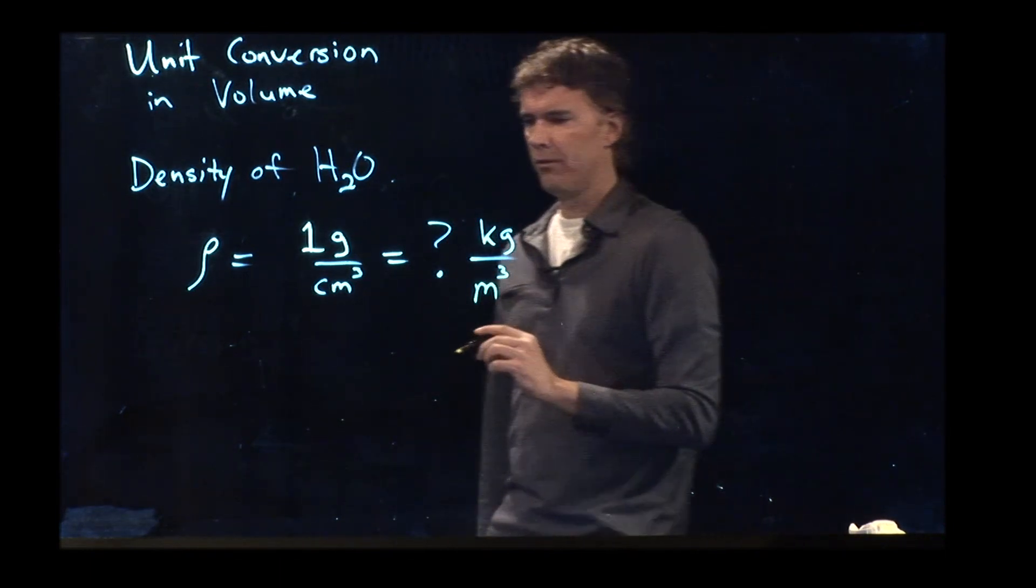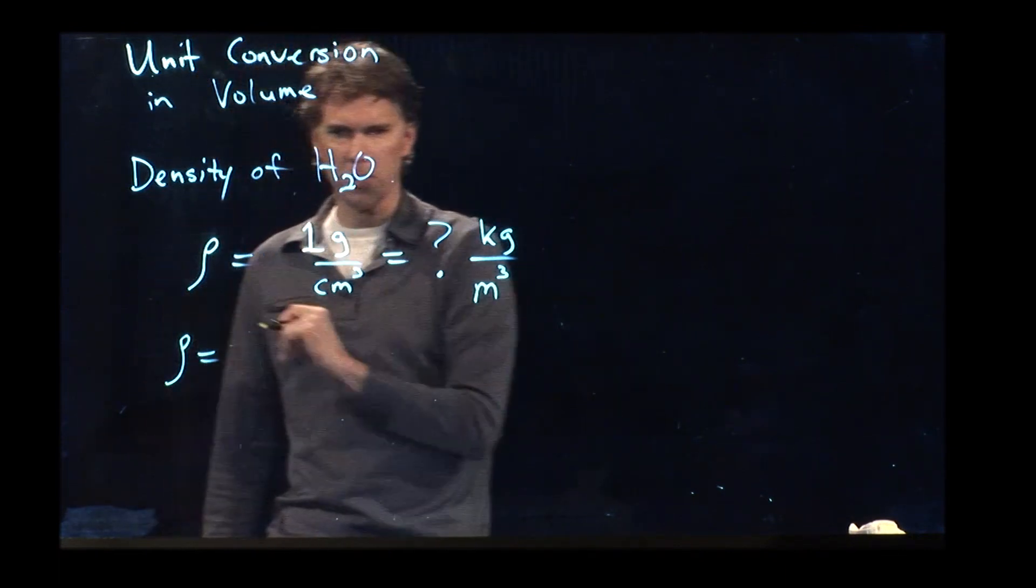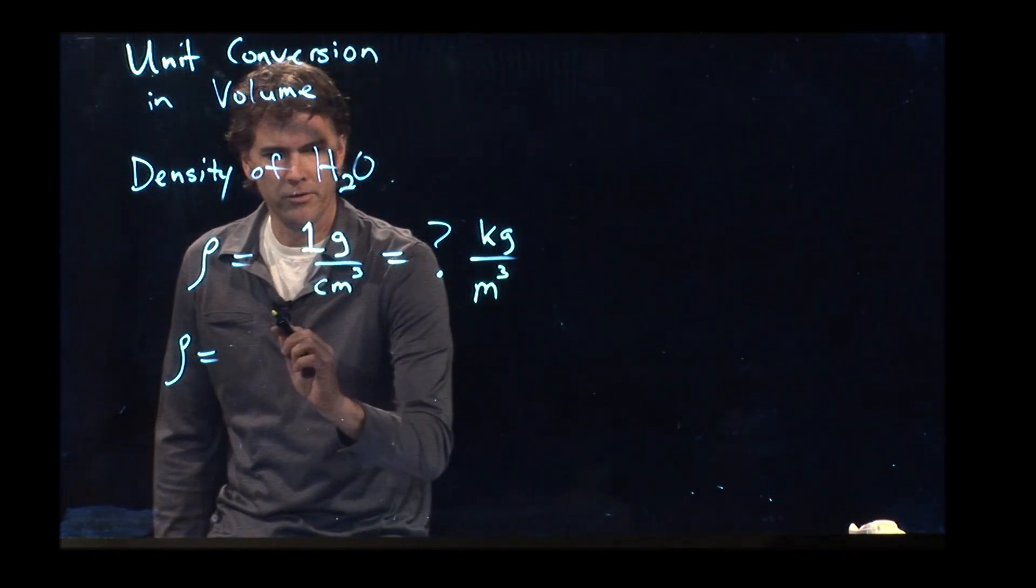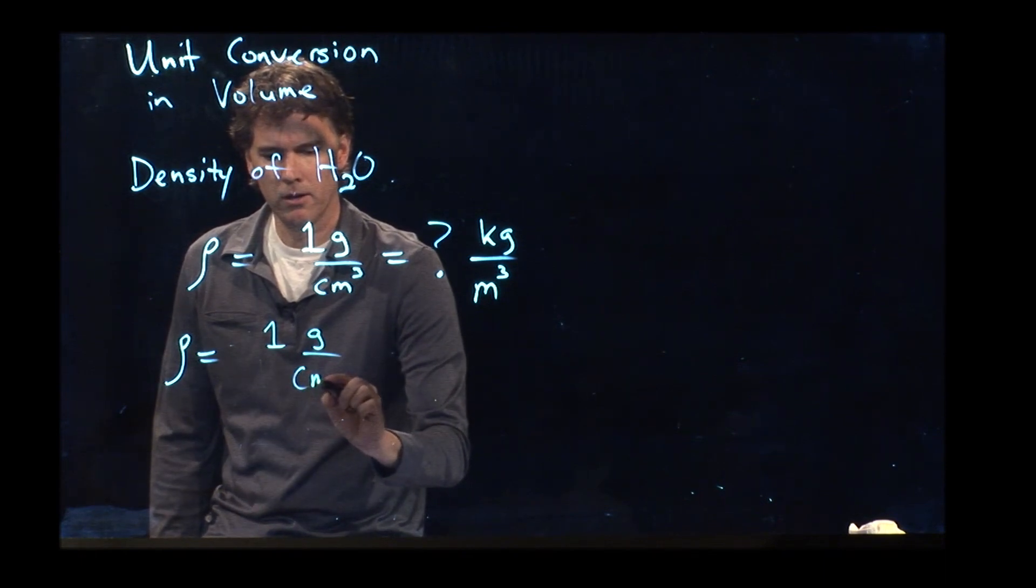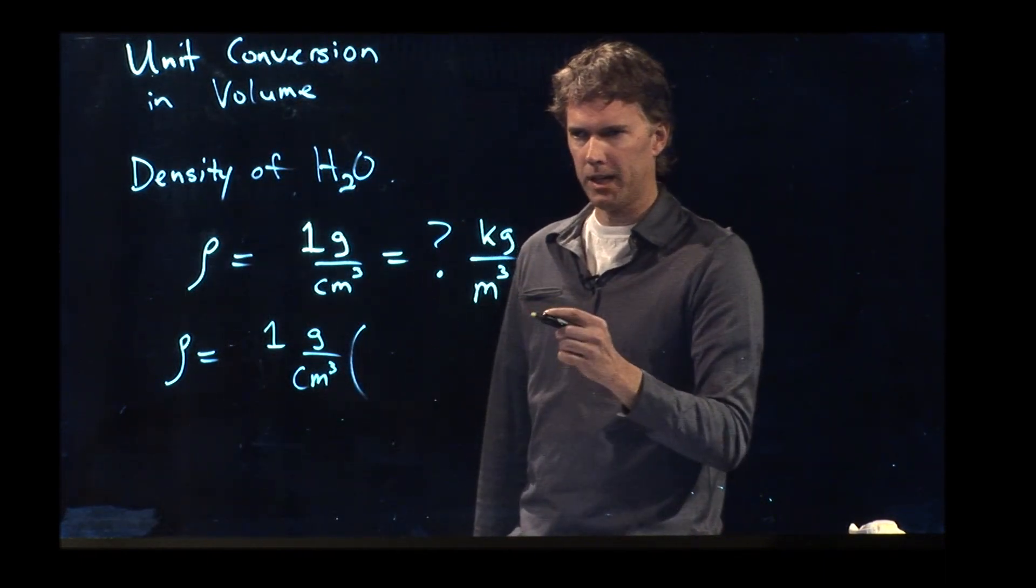Let's see if we can do this. The density rho - this is the Greek letter rho, it looks like a P that fell over. We've got one gram per cubic centimeter. The easy one first. Let's get gram to kilograms.